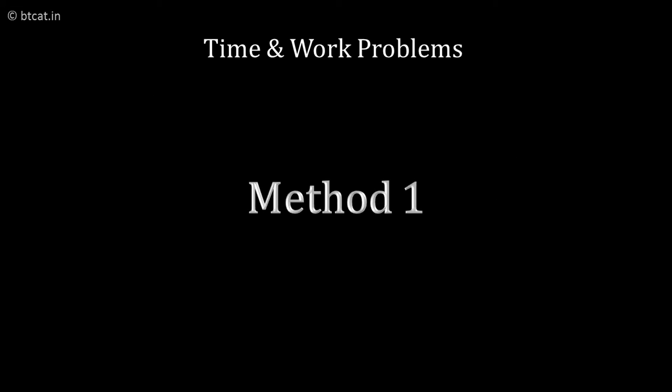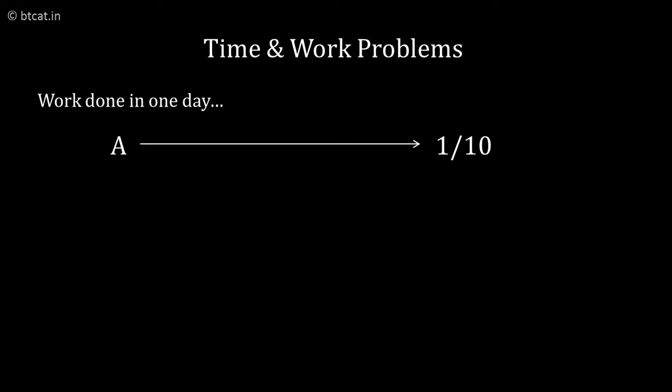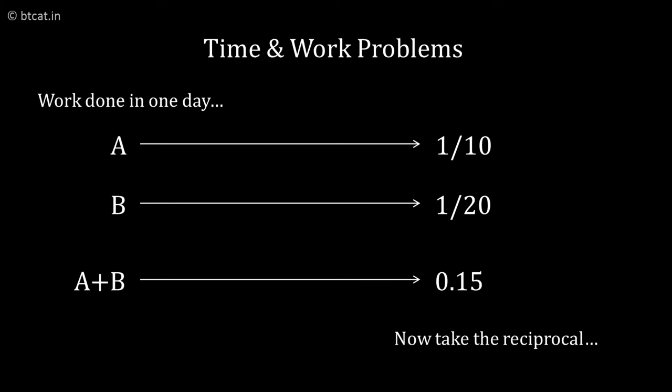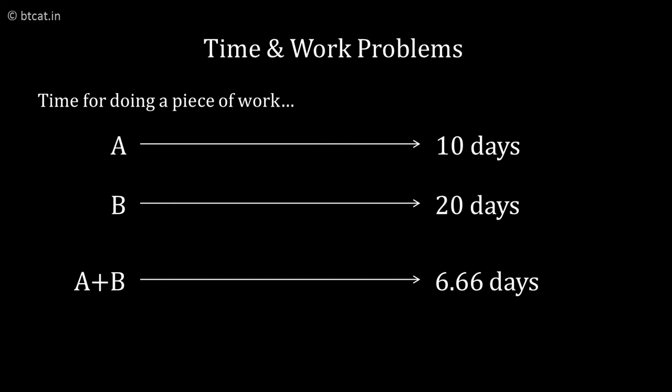One method of doing the question is to take one day's work which is 1 by 10, take one day's work of B which is 1 by 20 and add them. 1 by 10 plus 1 by 20 will give the resultant one day work of both of them, and the reciprocal of that will give the answer.